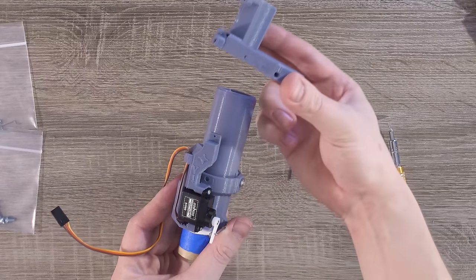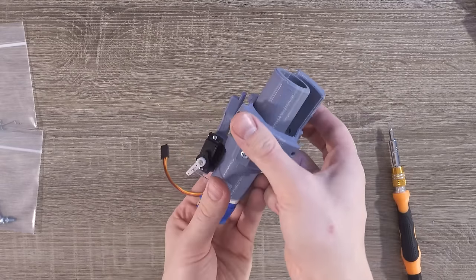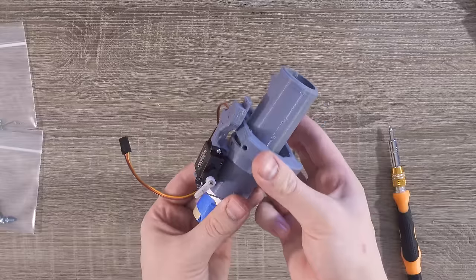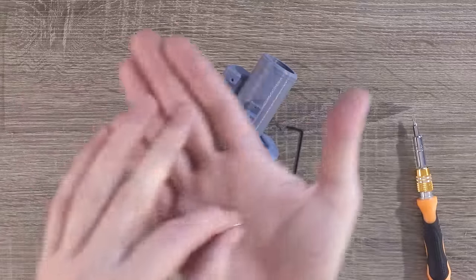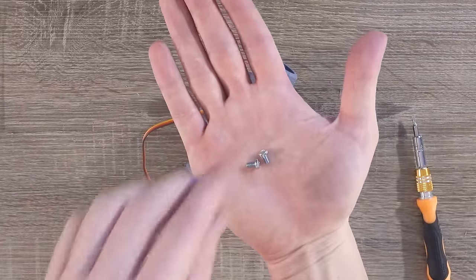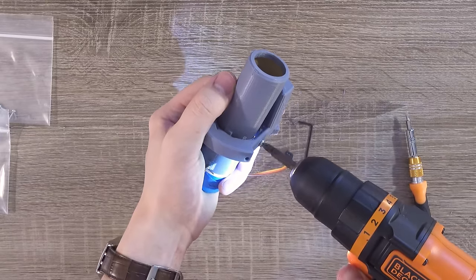With those aligned, take the outer gimbal and slide it over the motor mount and inner gimbal. The outer gimbal should sort of snap in place. Grab two of the shorter M3.5 screws and use them to attach the outer gimbal to the inner gimbal.